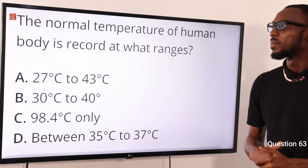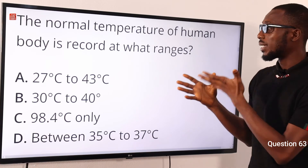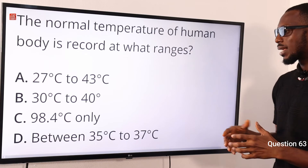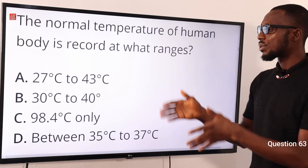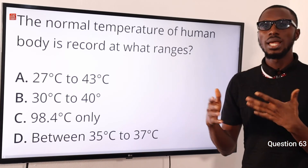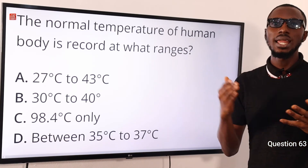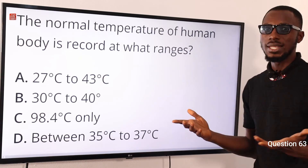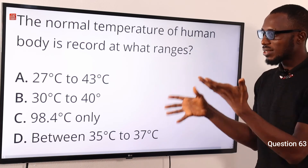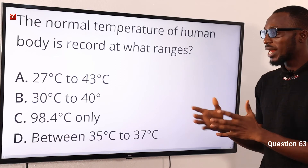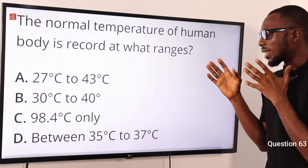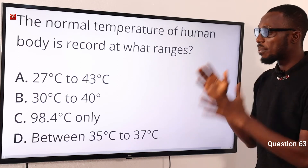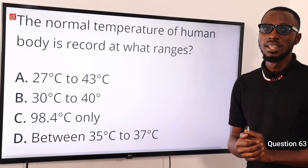Question 63: The normal temperature of the human body is recorded at what range? Normal human body temperature is relative — it can vary by age and geographical location. Based on the options provided, the most viable answer is between 35 and 37 degrees. Option D is the most viable option. If you have better contributions, please indicate the question number and share your response.